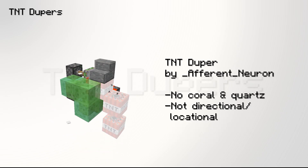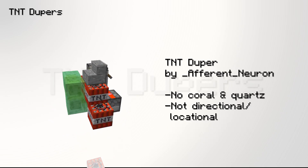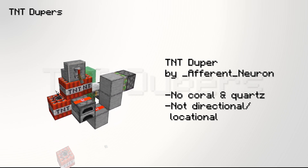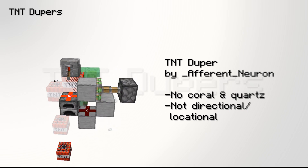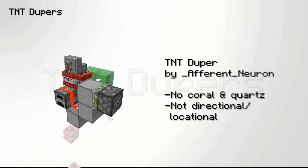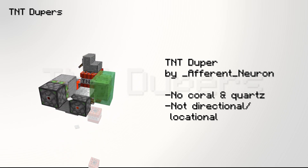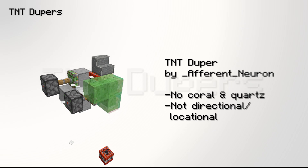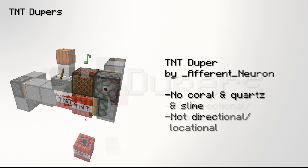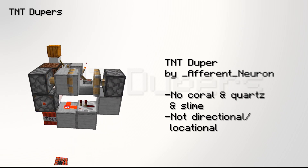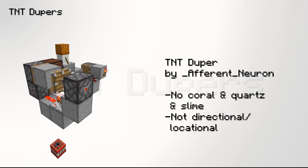The third and fourth duper are both designed by Afrin Neuron. Both of these designs do not use any quartz. The third design uses carpet and slime to dupe the TNT. The last design uses snow layers to update the TNT.